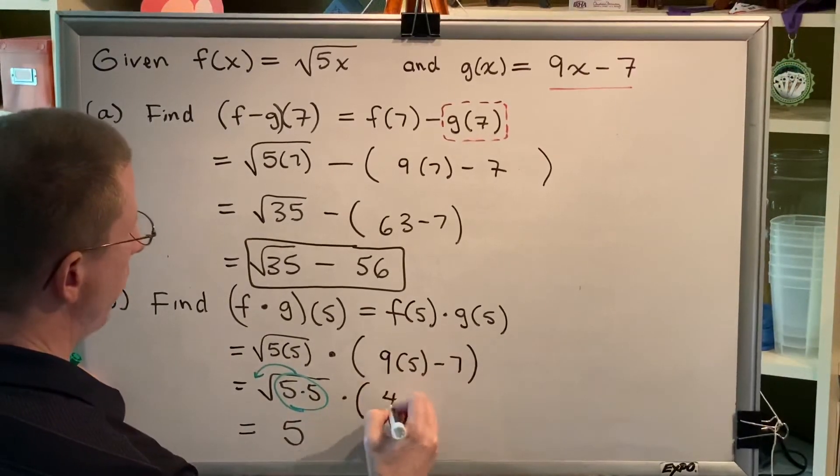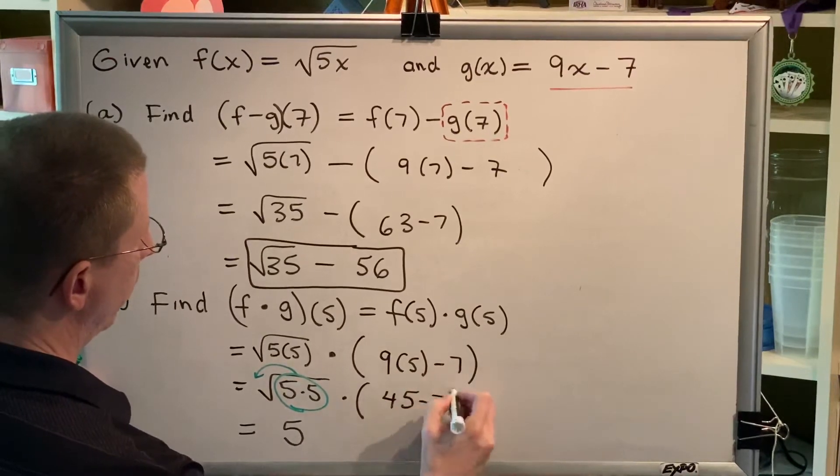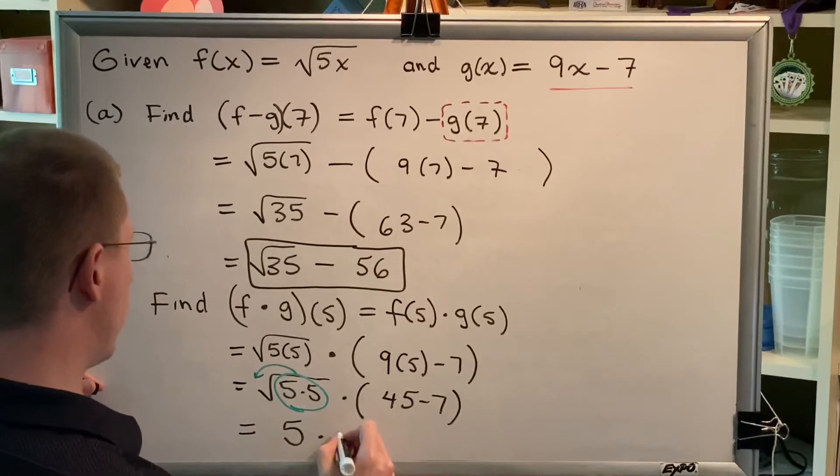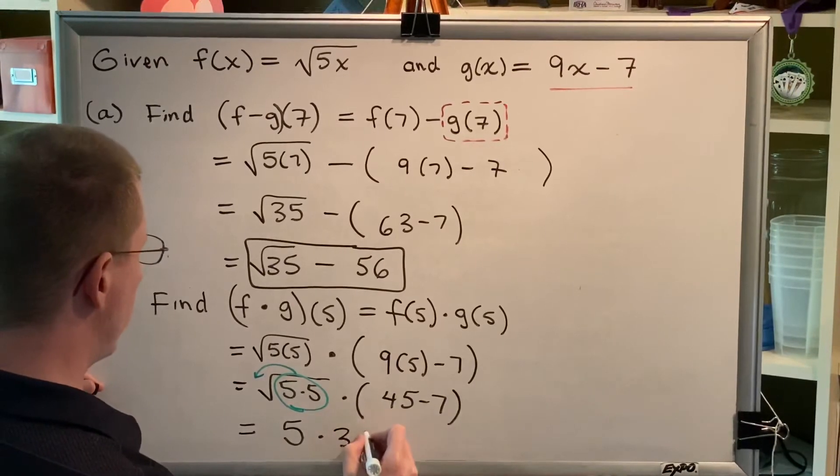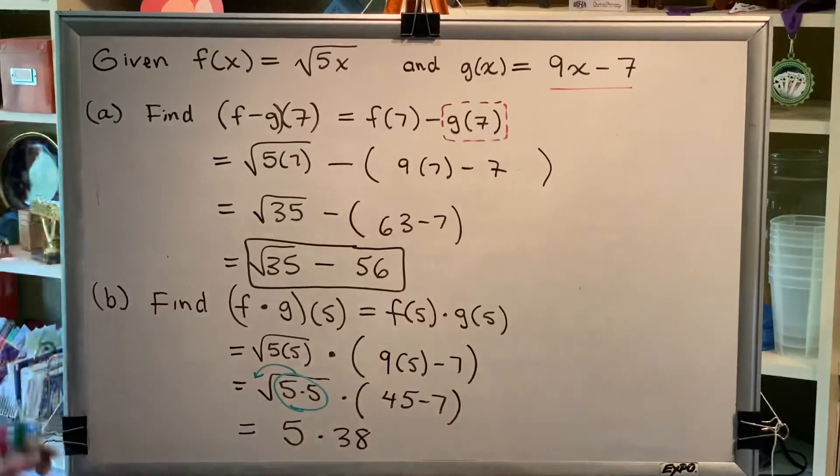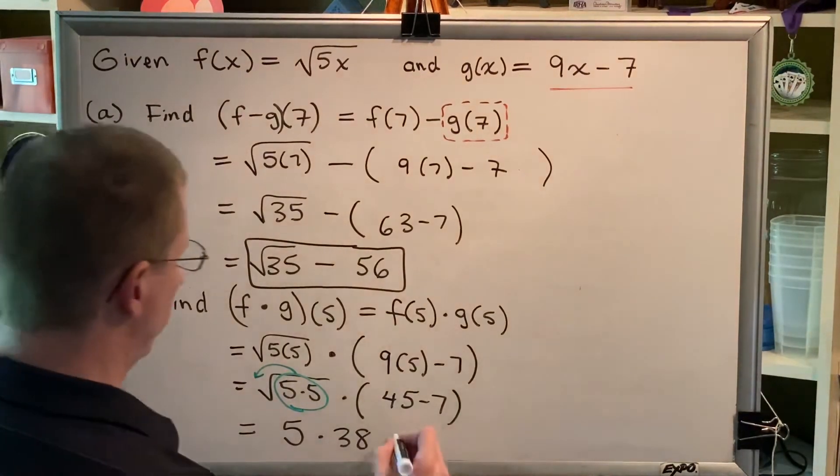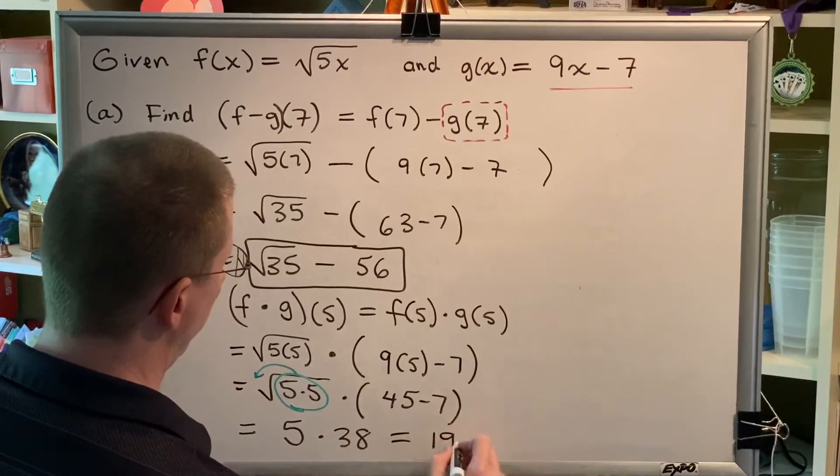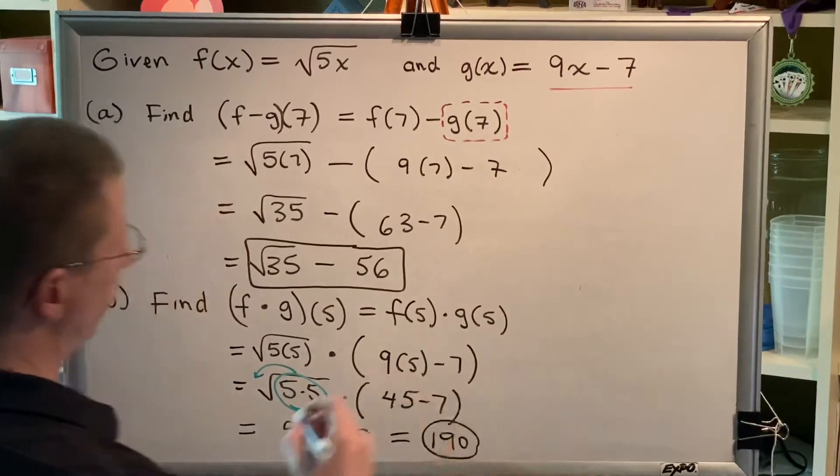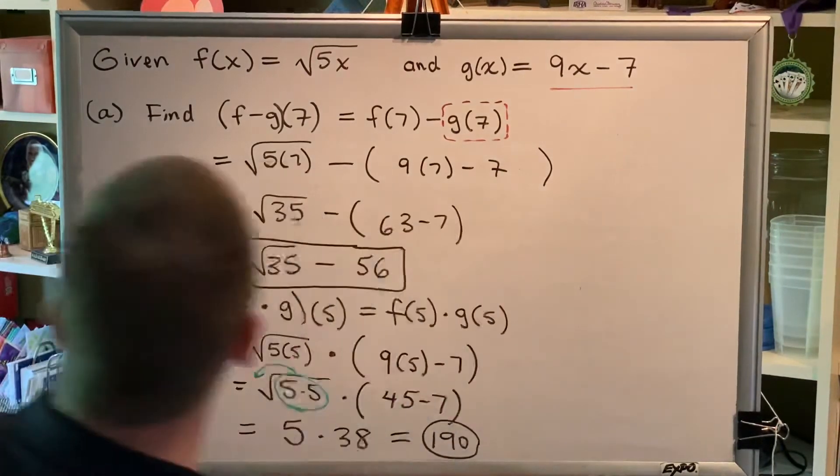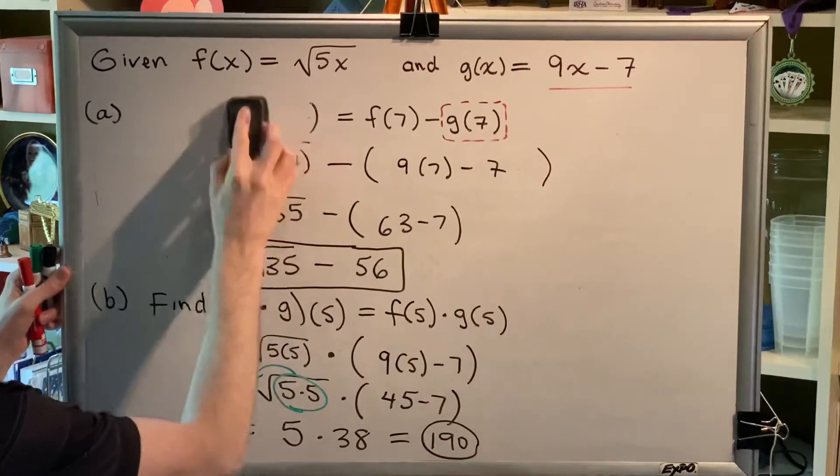Here, 9 times 5 is 45, and 45 minus 7 is 38. So, we've got 5 times 38, which is 190. Alright. That's parts A and B. Let's move on to part C.